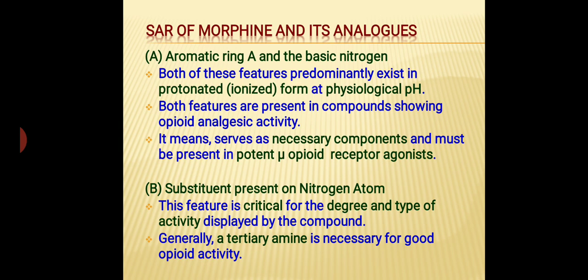Now we talk about the aromatic ring A and basic nitrogen. Both of these features predominantly exist in protonated form at physiological pH. Both features are present in compounds showing opioid analgesic activity, meaning they serve as necessary components and must be present in potent mu receptor opioid agonists.